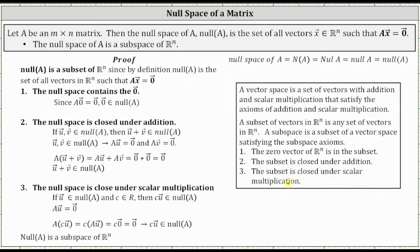Let's begin by proving the null space contains the zero vector. Since matrix A times the zero vector is equal to the zero vector, we know the zero vector must be in the null space of A.